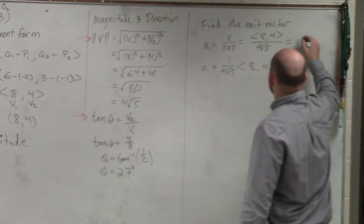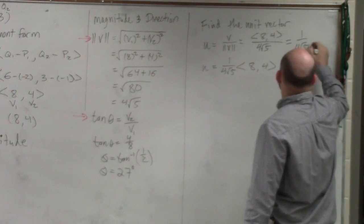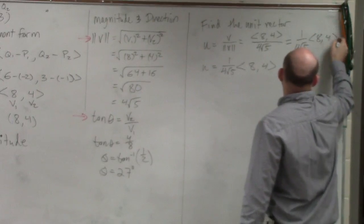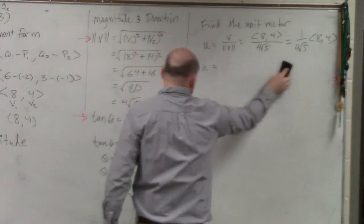So actually, let me write it like this. So this is 1 over 4 square root of 5 times 8 comma 4. So when I distribute this,